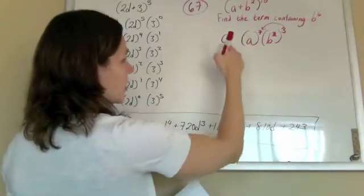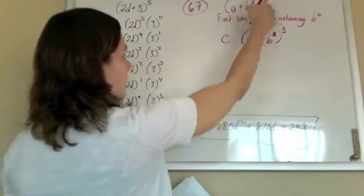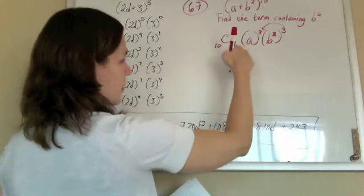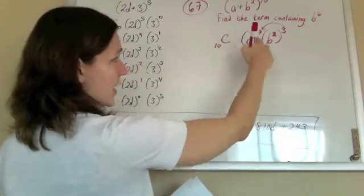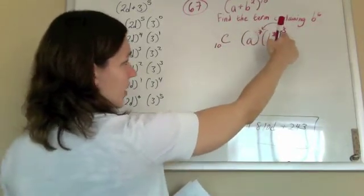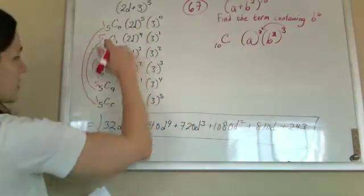Now to figure out this C over here, I know it's going to be 10 C something. It turns out I can actually either drop either this guy or that guy down there because it was nice and symmetric.